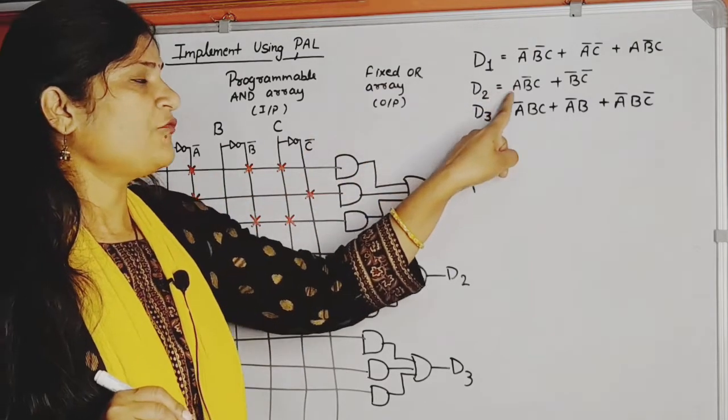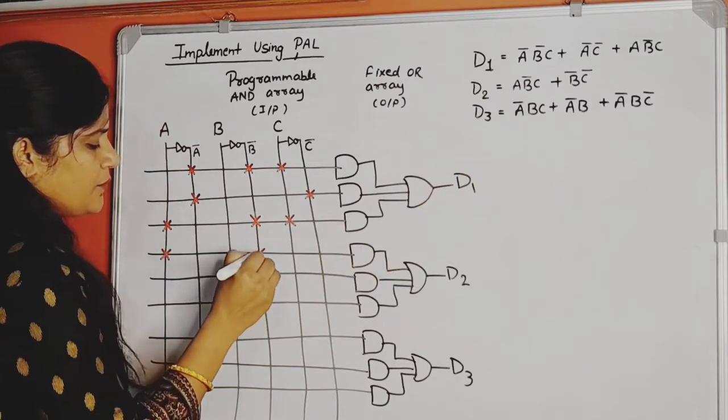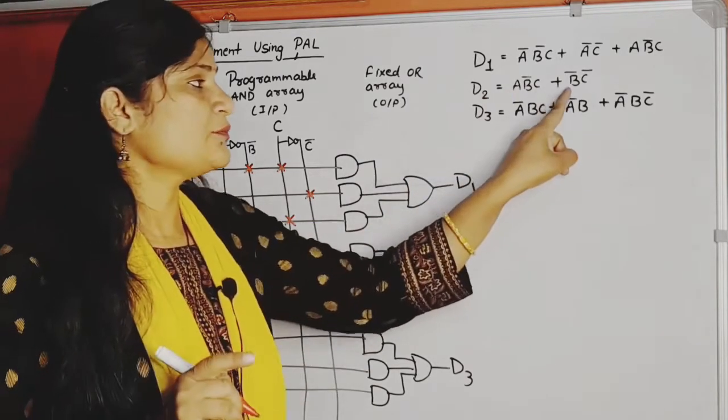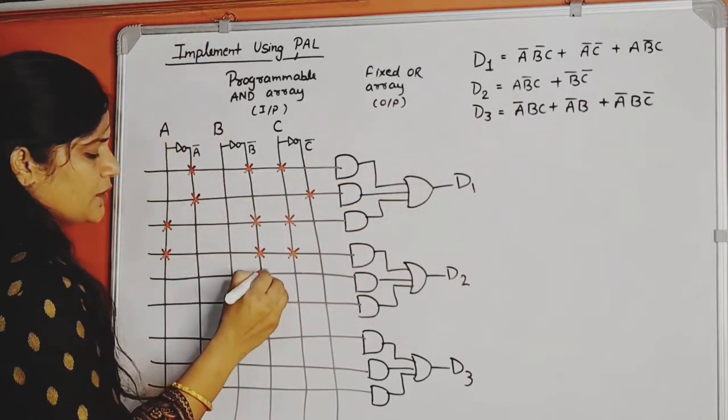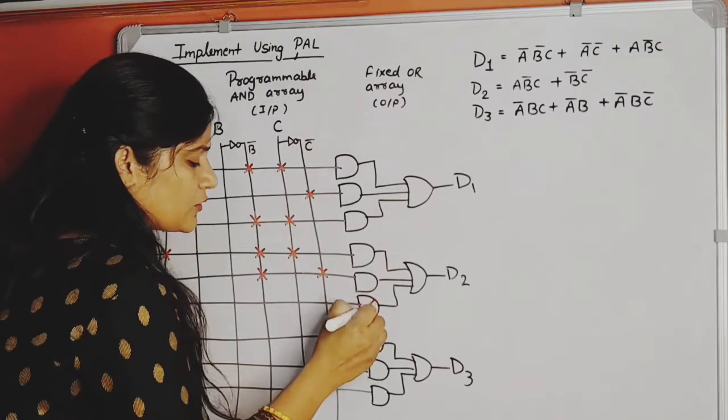Now for D2, first term is ABC̅, means A̅BC̅, which means A̅, B, C̅. There is no third term, so this AND gate we will cross, meaning it is not connected to anyone.